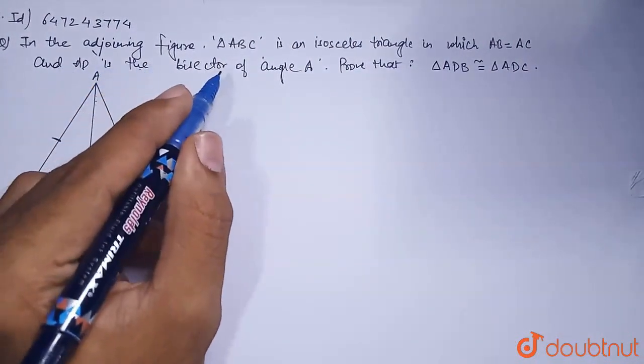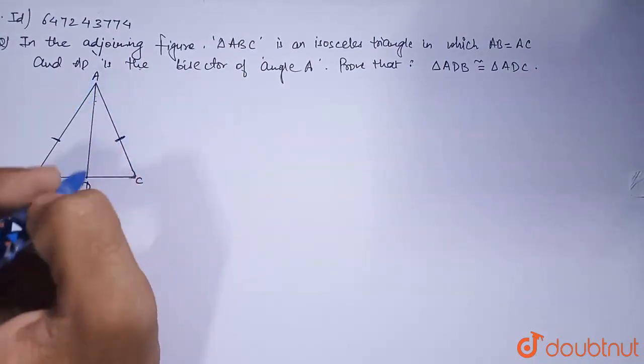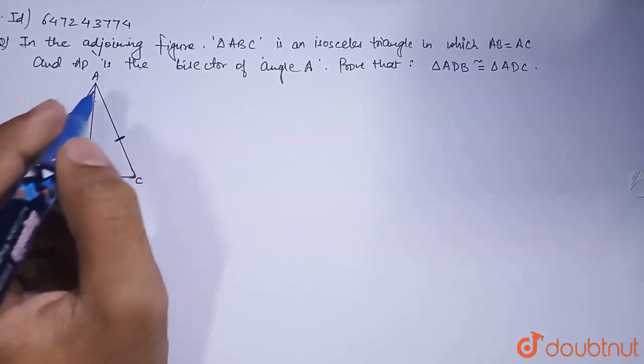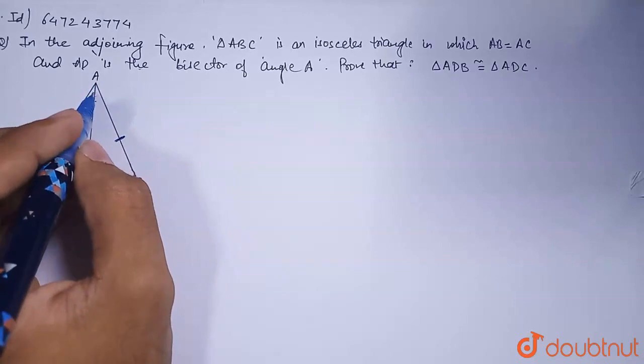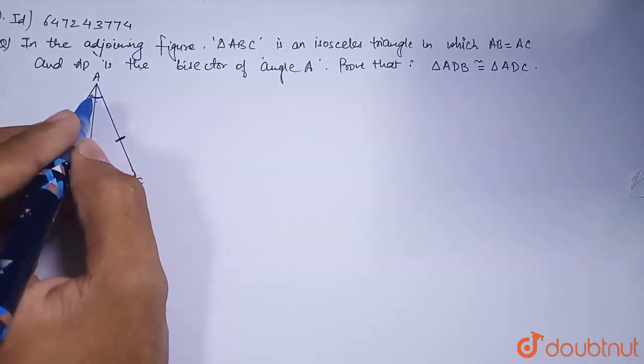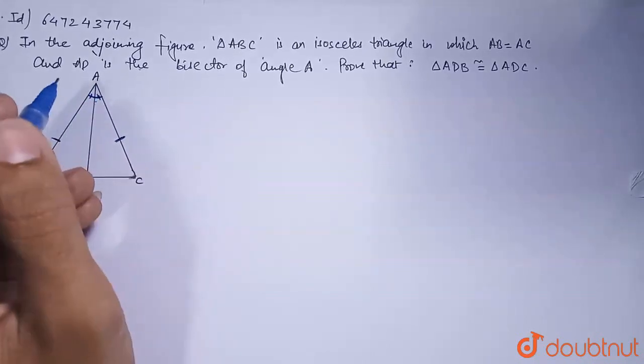and AD is the bisector of angle A. AD line, which is in this triangle, bisects the whole angle A, means it is equally divided into two parts.